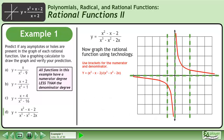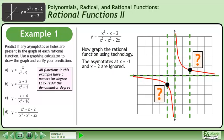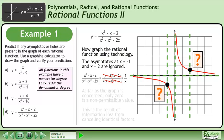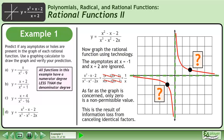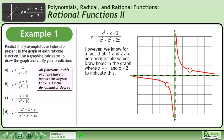Now graph the rational function using technology. Use brackets for the numerator and denominator. On the graph, the asymptotes at x equals negative 1 and x equals 2 are ignored. To see why, factor the rational expression and cancel identical factors — this gives us 1 over x. Only 0 is a non-permissible value as far as the graph is concerned, due to information loss from canceling identical factors. However, negative 1 and 2 are still non-permissible values, so draw holes in the graph at x equals negative 1 and x equals 2 to indicate this.